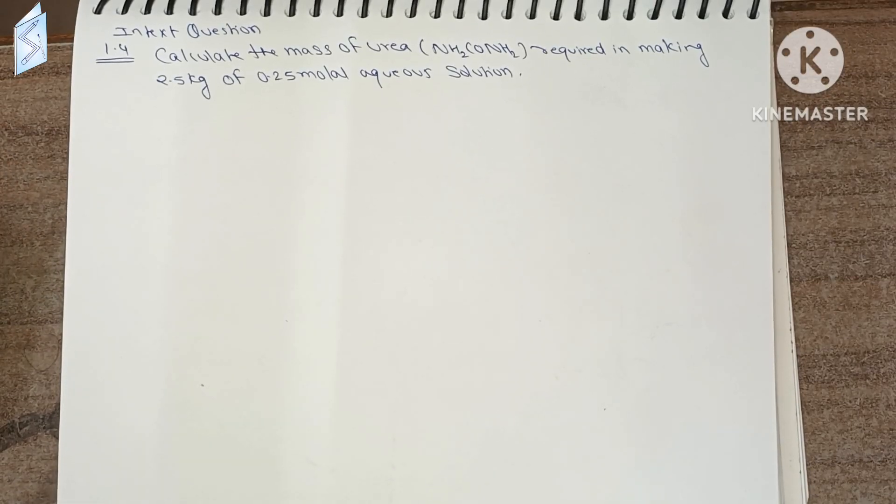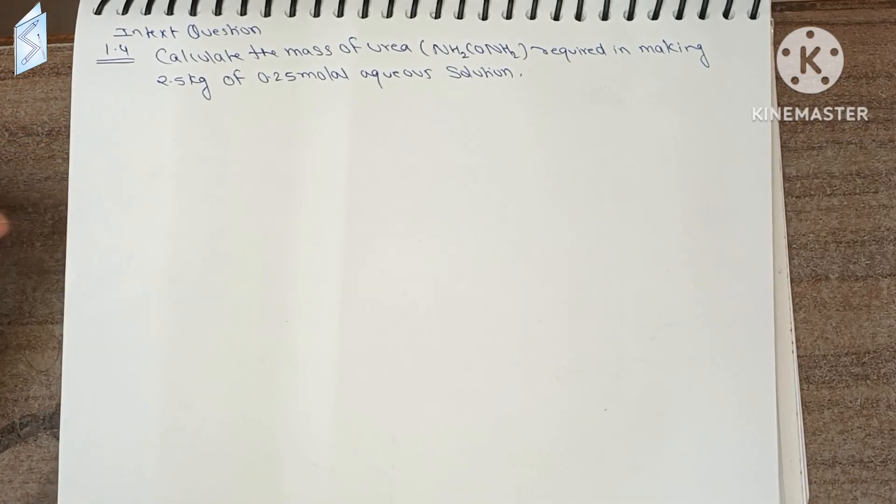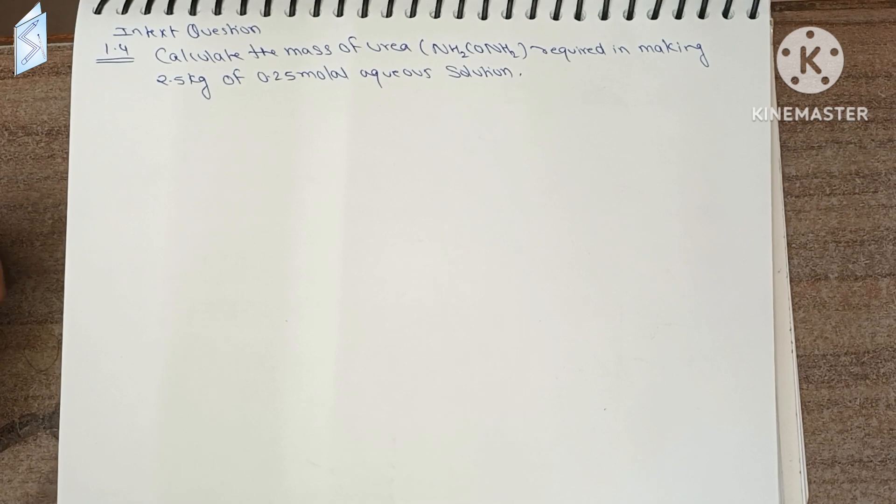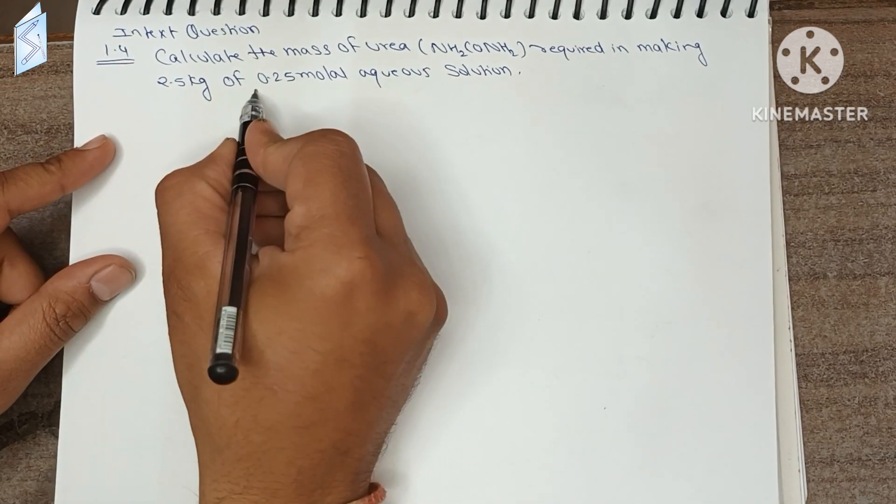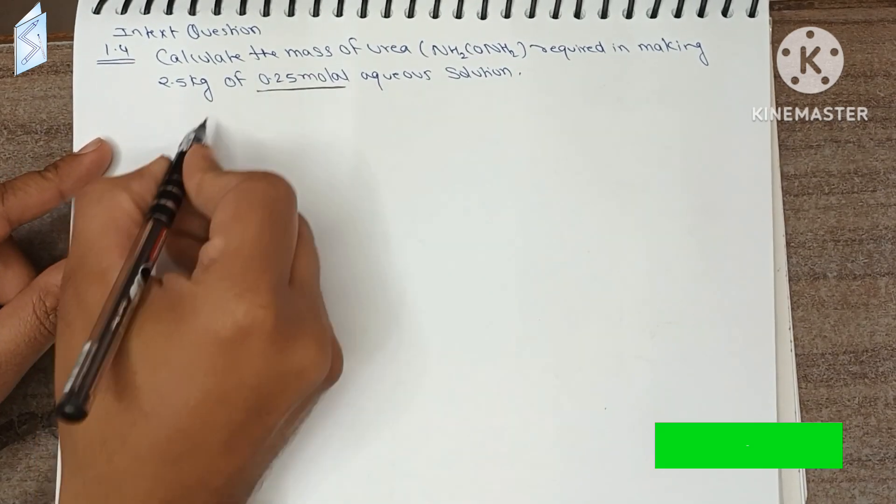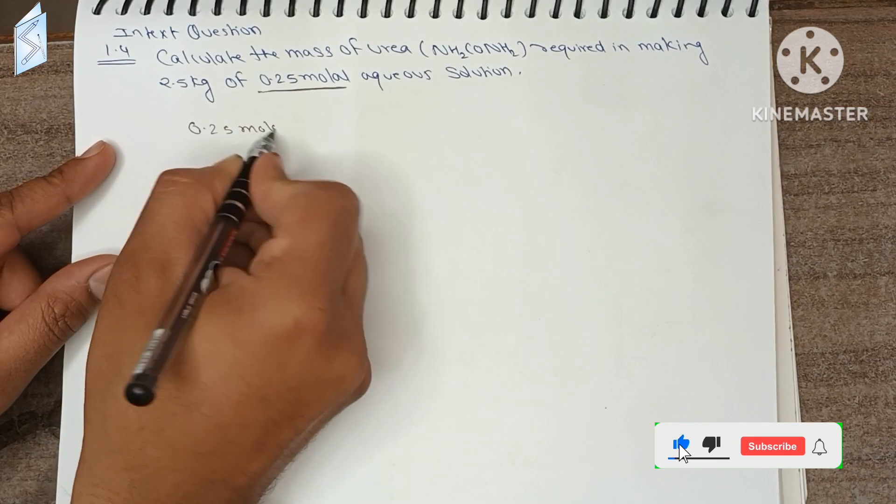Hello students, in text question 1.4 chapter 1 solutions: calculate the mass of urea required in making 2.5 kg of 0.25 molal aqueous solution. Let's see, we have 0.25 molal aqueous solution.